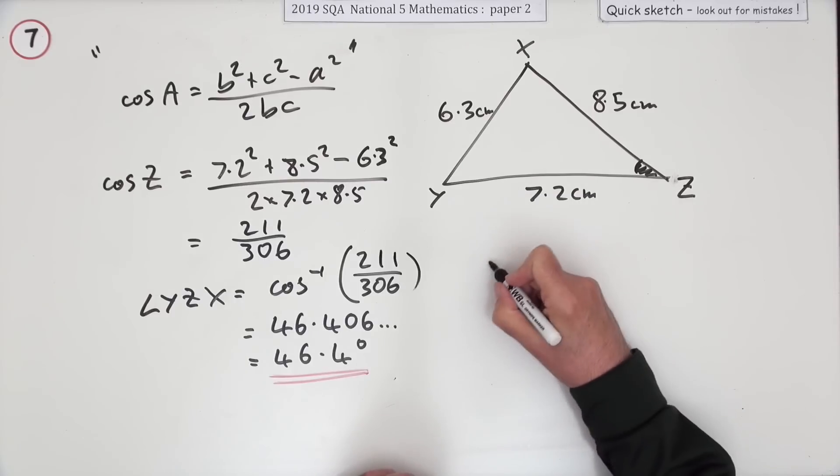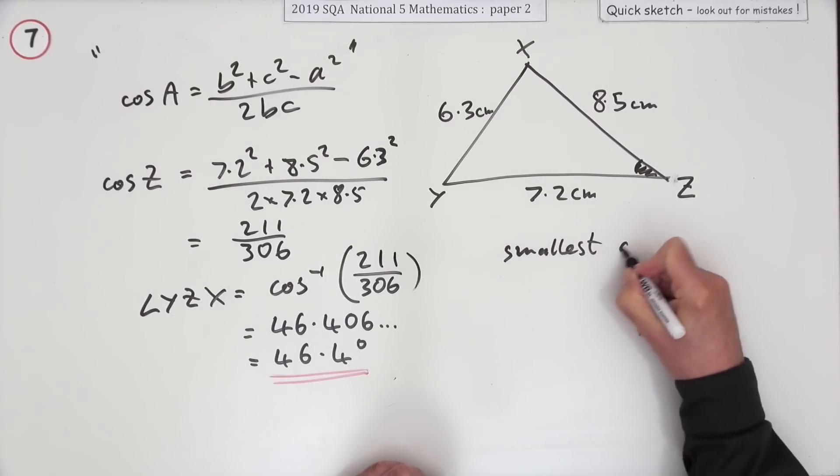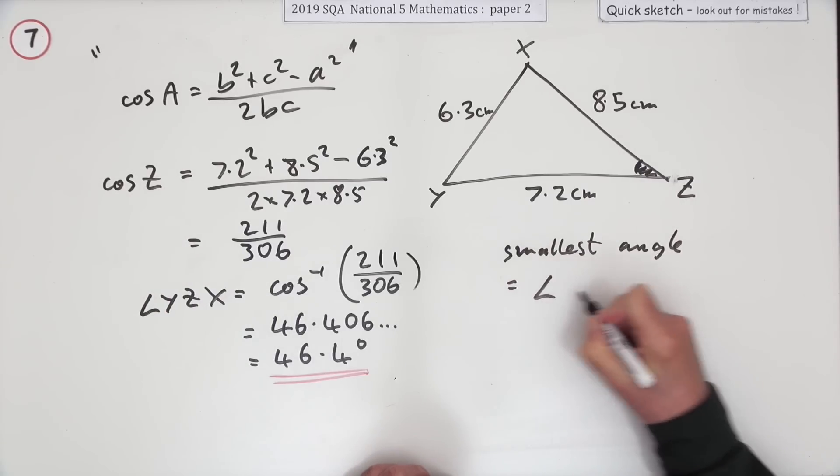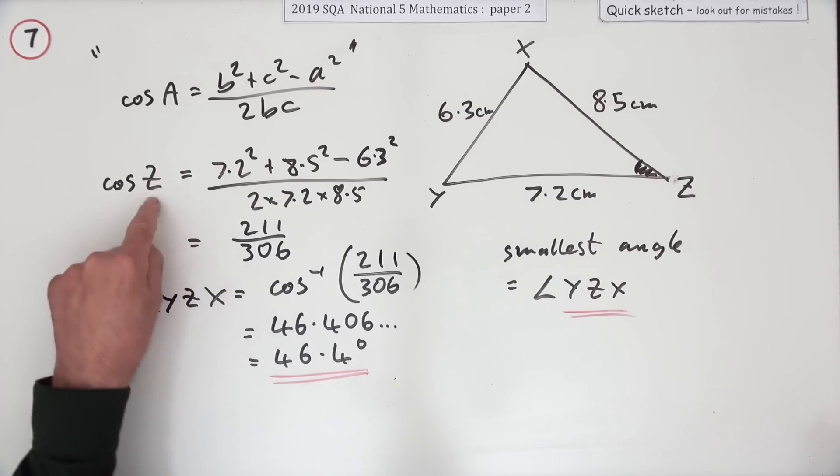I don't know if I should have put down at the beginning smallest angle, or that's implied by this. You could say z, but I'll just go for y, z, x. That should be implied by that calculation, by mentioning z.